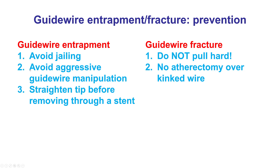For prevention of entrapment, one approach would be to avoid jailing — though jailing is important for preserving the side branch. One should avoid aggressive guidewire manipulations and straighten the tip before removing a wire that has been jailed through the stent.